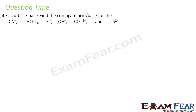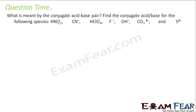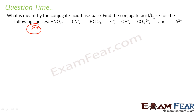Let's take a question: what does it mean by conjugate acid-base pair? An acid-base pair that differs by H+ is called a conjugate acid-base pair. Now we will define the conjugate acid and base for the following species.